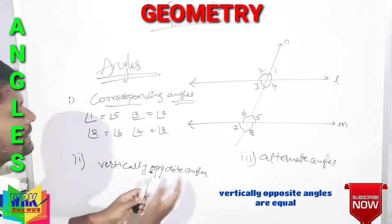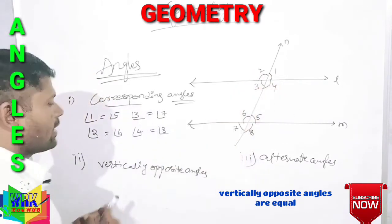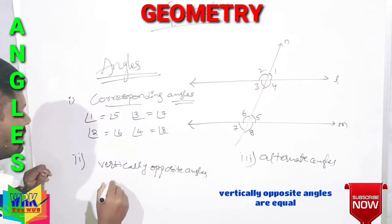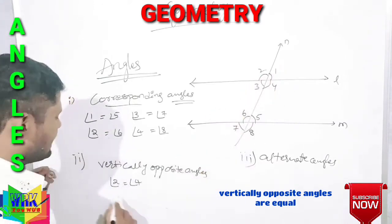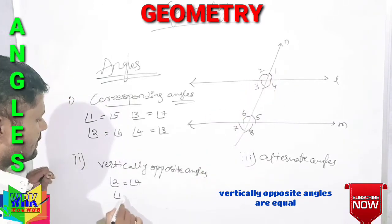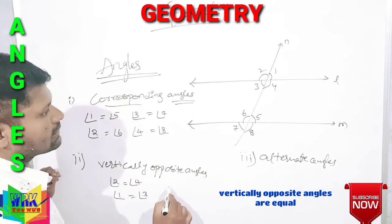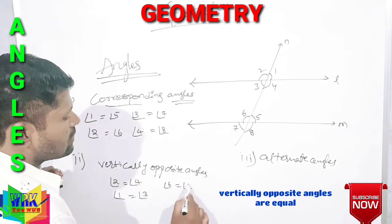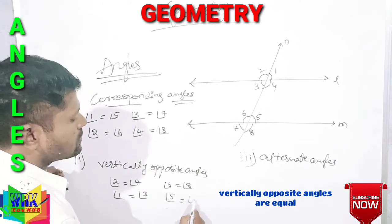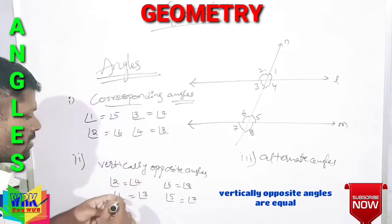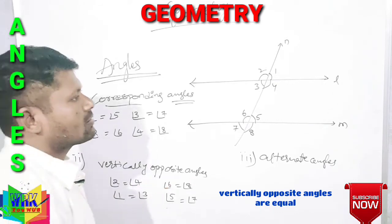Vertically opposite angles: angle 2 and angle 4 are vertically opposite and equal. Similarly, angle 1 and angle 3, angle 6 and angle 8, angle 5 and angle 7 are all vertically opposite angles and are equal.